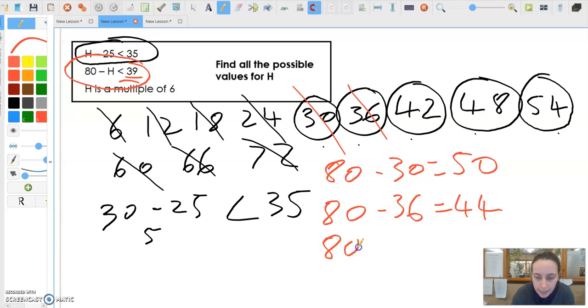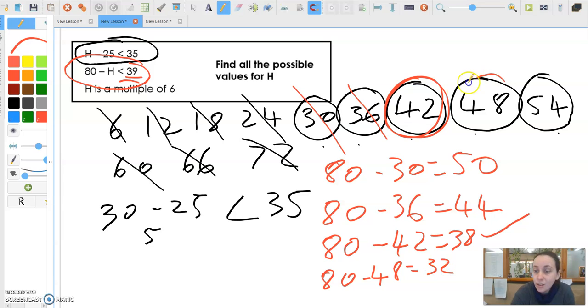Then I did 80 minus 42 equals 38. Is 38 less than 39? It is indeed. So I'm just going to circle that one. Then I did 80 minus 48 equals 32. That works. And 80 minus 54 is 26. So that works.